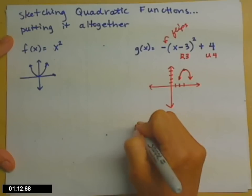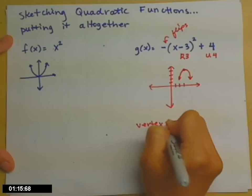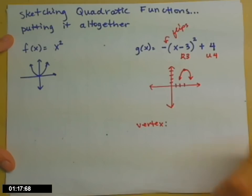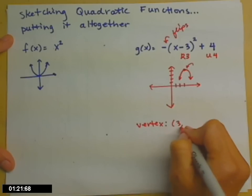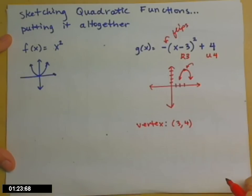So some things that you will be asked to do. State the vertex. So that's that point right there. And we got there by moving right three spaces and up four spaces.